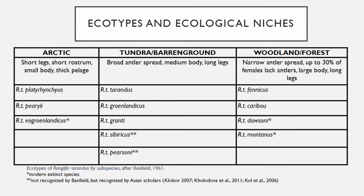Rangifer tarandus, who are colloquially known as caribou in North America and reindeer in Europe and Asia, are a circumpolar and circumboreal species with innumerable and often debated subspecies, but with three globally occurring ecotypes which, despite the vast differences between them, share similarities in size, behavior, herd composition, and habitat.